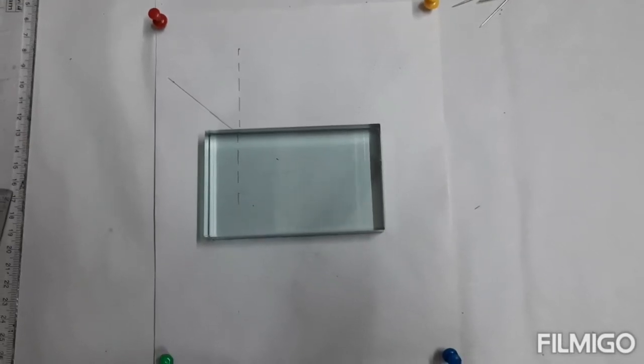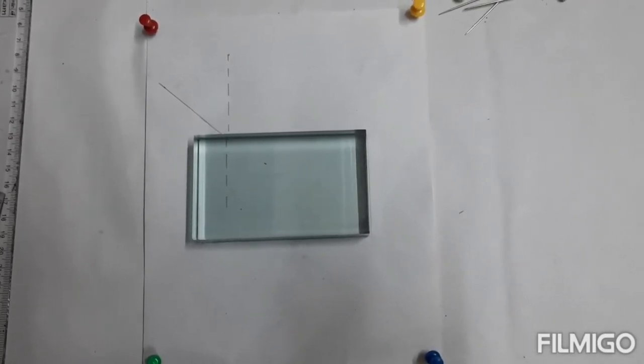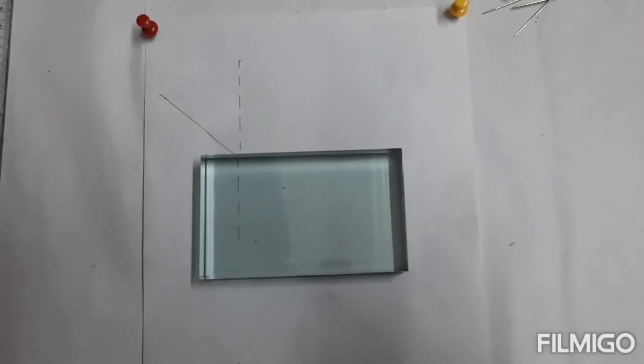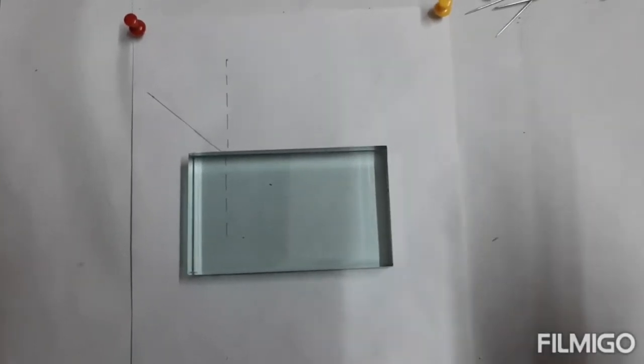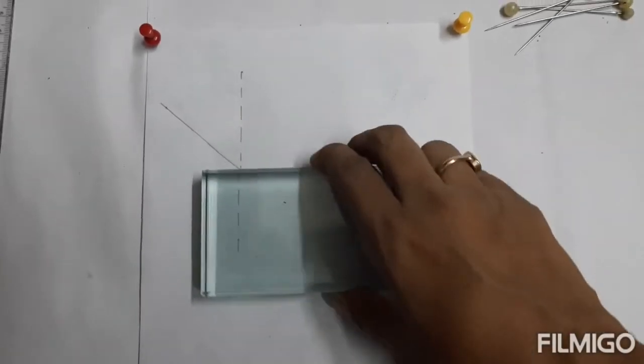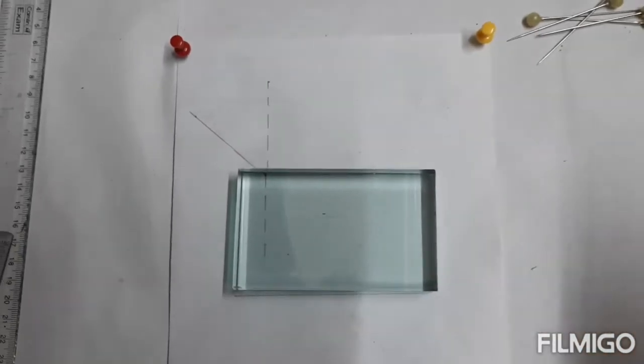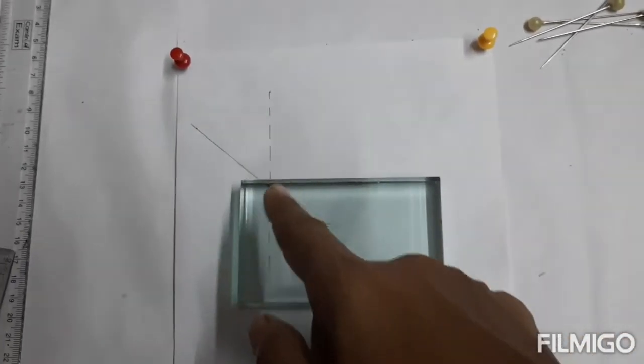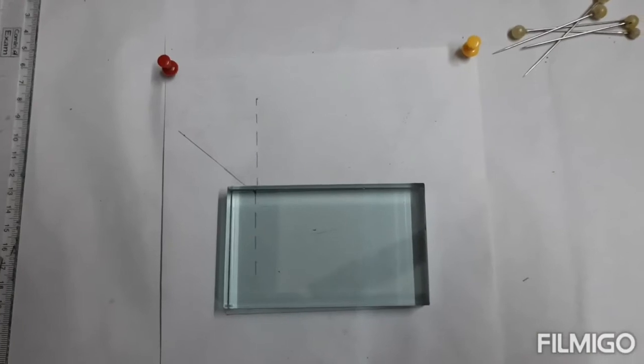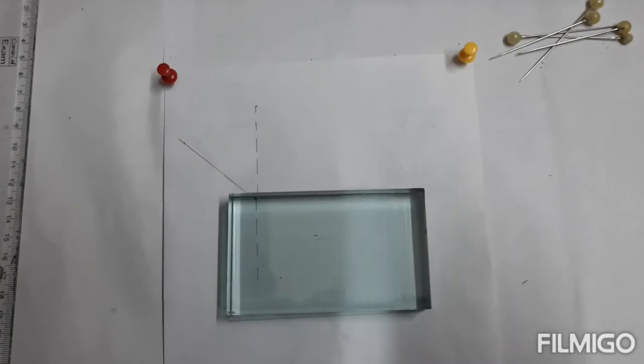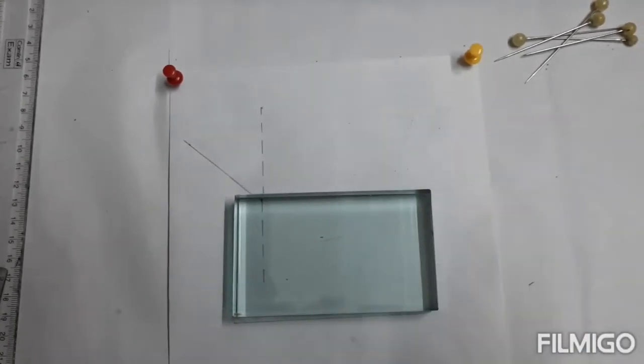A sheet of paper is pinned with the help of four board pins and a glass block is taken. The outline is drawn so that if we remove the glass block it can be placed again back in the same position. An incident ray is taken of any angle later on we will measure. Normal is also drawn.